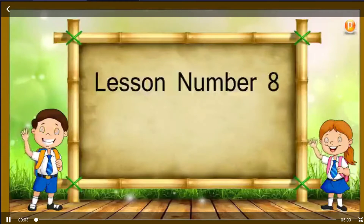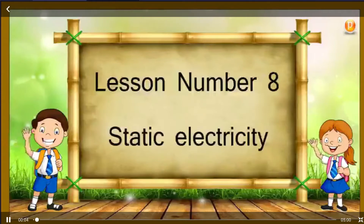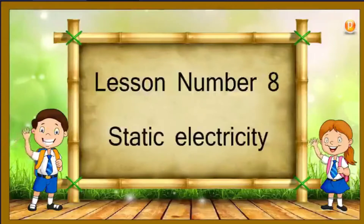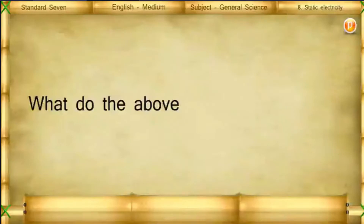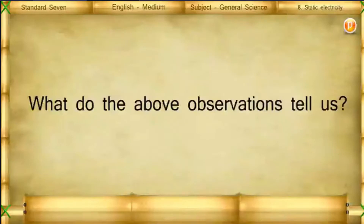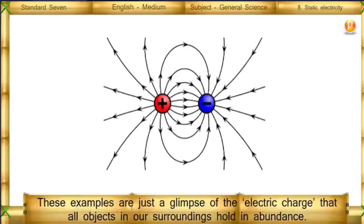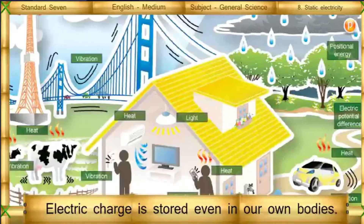Lesson number 8: Static Electricity. Electric Charge. These examples are just a glimpse of an electric charge that all objects in our surroundings hold in abundance. Electric charge is stored even in our own bodies.